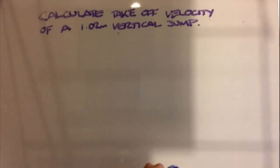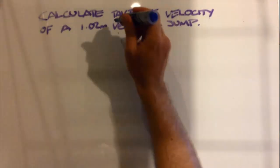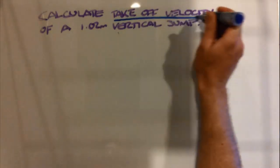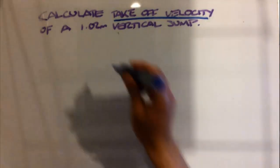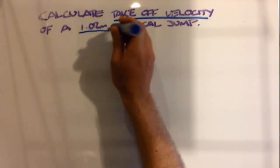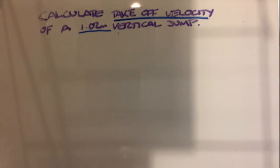First off, we start by identifying the important information. We are looking for the takeoff velocity and we have a 1.02 meter vertical jump.